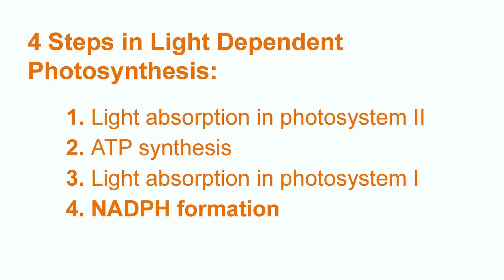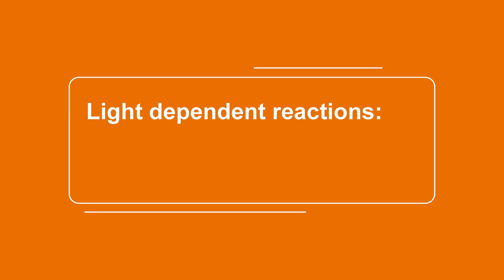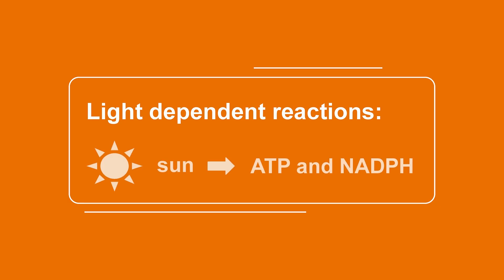The fourth step is NADPH formation. NADPH is generated by an electron transport chain via the high-energy electron. The goal of light-dependent reactions is to turn sunlight into ATP and NADPH, which will be used in the light-independent reactions.